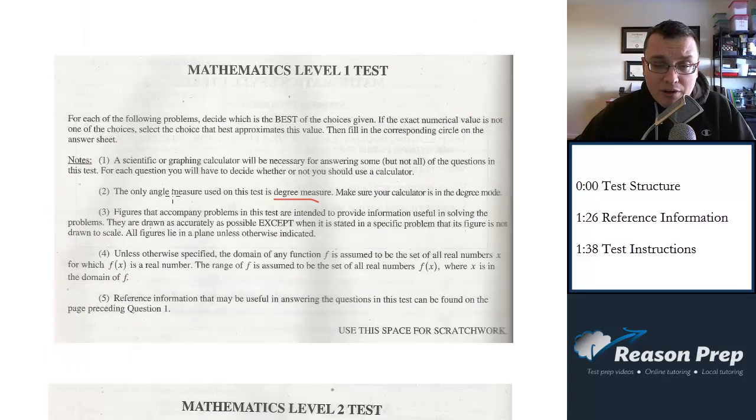A few notes just to point out, I'm not going to read this through. The first part says sometimes you have to round. If you get 2.83, then 2.8 is going to be your answer. Scientific or graphing calculator will be necessary for answering some but not all of the questions. You do need to have a calculator.